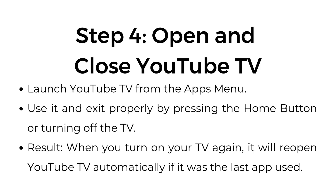Step number four: Open and close YouTube TV. Launch YouTube TV from the apps menu. Use it and exit properly by pressing the home button or turning off the TV. Result: when you turn on your TV again, it will reopen YouTube TV automatically if it was the last app used.